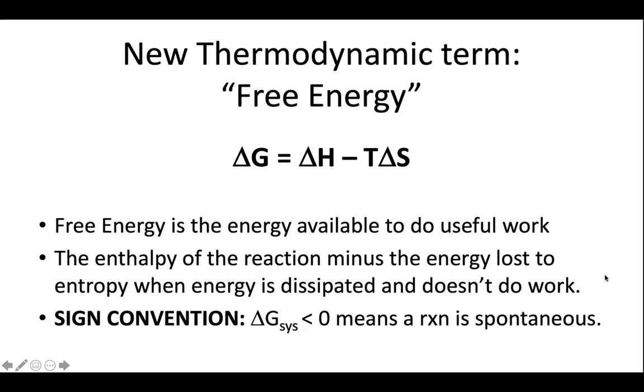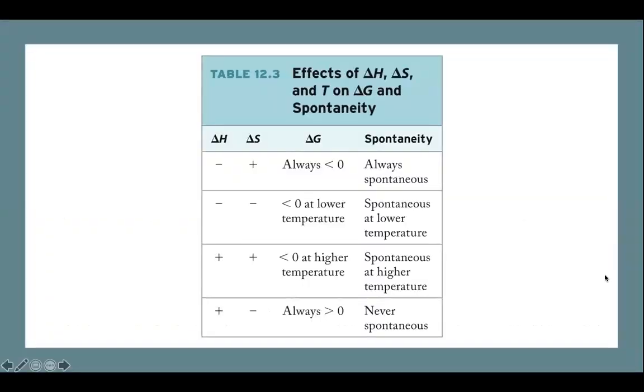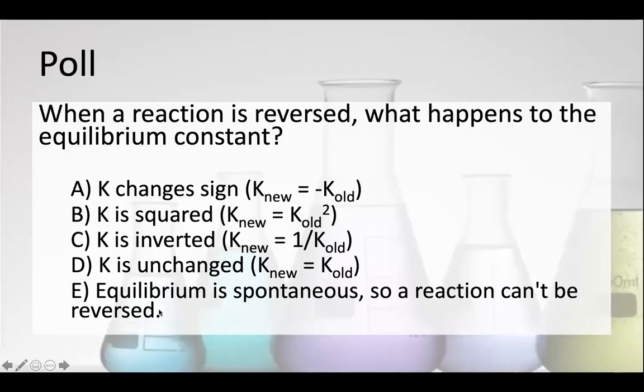So our sign convention for this is if the delta G is less than zero, that will mean the reaction is spontaneous. And like we talked about earlier in the semester, depending on the signs of delta H and delta S, delta G is going to change. If we have a negative delta H that's favorable exothermic and a positive delta S, which is also favorable and increase in entropy, then our reaction will always be spontaneous. And you can see how that changes if we have different signs of enthalpy and entropy.